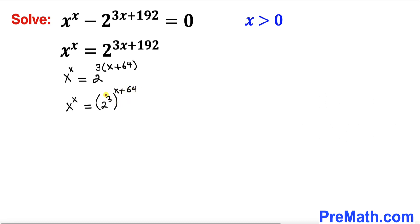Let's focus on what's inside the parentheses. 2^3 equals 8, so the right hand side can be written as 8^(x+64).